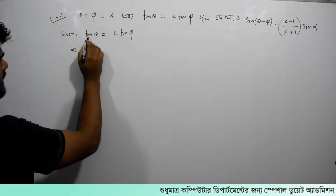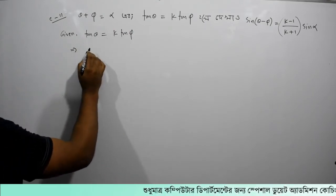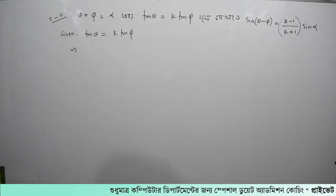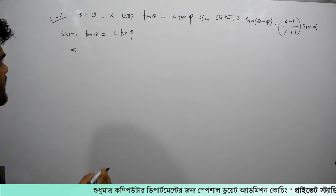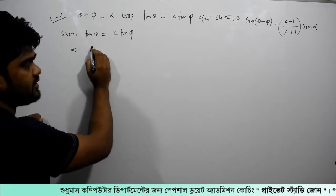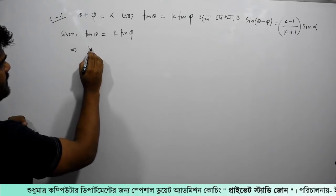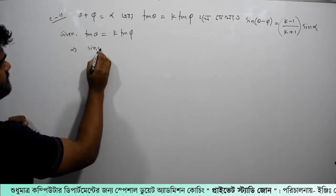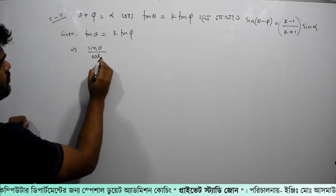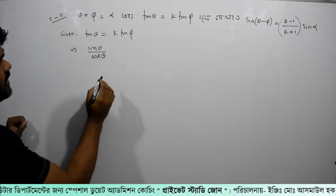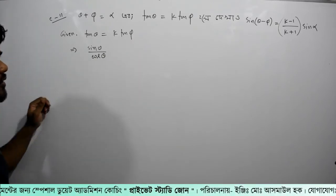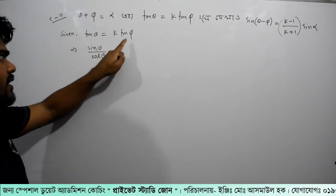So here we have a big calculation. We will learn: tan theta here, then tan theta here equals sin theta by cos theta, and tan phi here equals sin phi by cos phi.